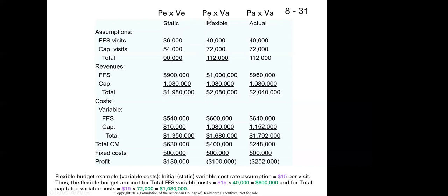The flex budget blends the two together. It's kind of an unintuitive idea until you get used to it, but the flex budget takes the expected price and multiplies it by the actual volume. Basically what it tells us is: given our expected price — either revenue per unit or cost per unit — at your actual volume, this is what your budget should have been. If our price expectations were right, taking our price expectations times our actual volume, this is what your budget should have been based on what you actually did.